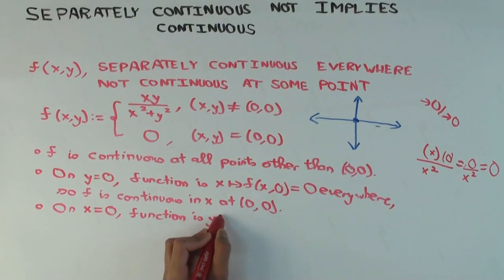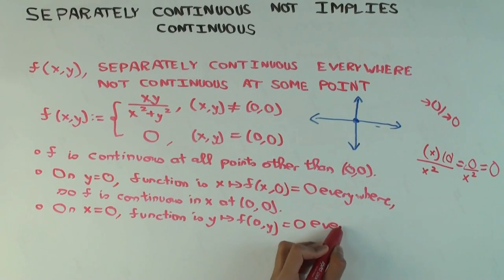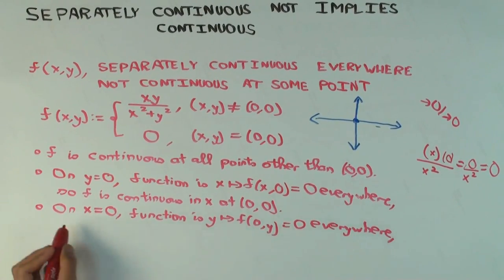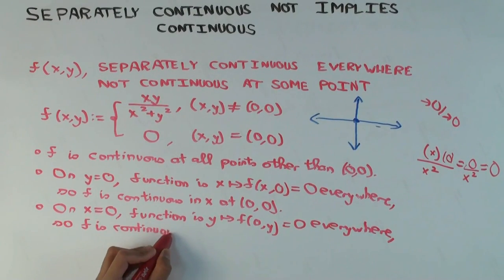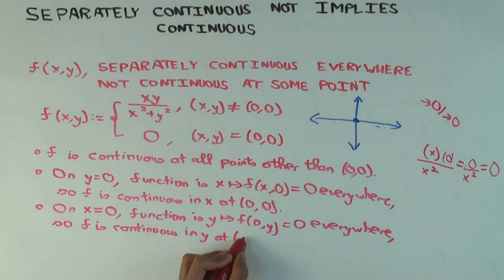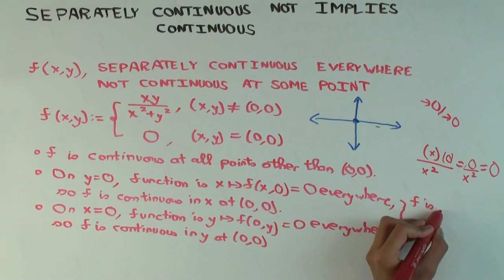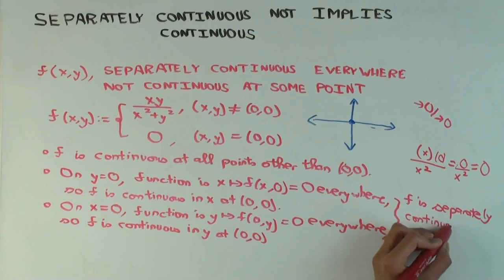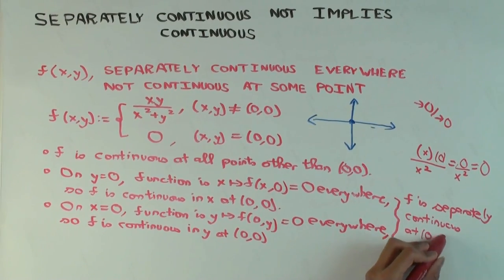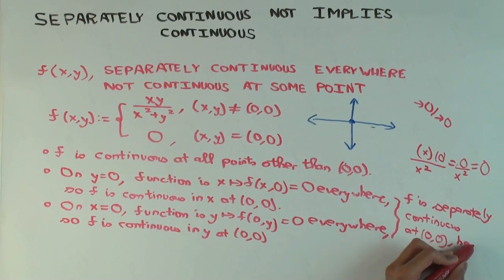So now the function is y goes to f(0, y). When x equals zero, it's the same situation as for x. So f is continuous in y at the origin. Combining these, f is separately continuous at the origin. It's already separately continuous everywhere else — it's continuous and hence also separately continuous everywhere else. So it's actually separately continuous everywhere.